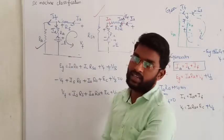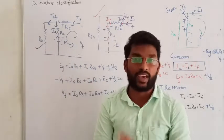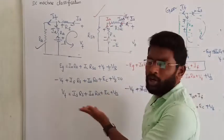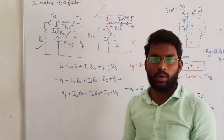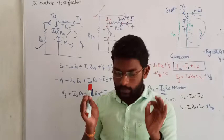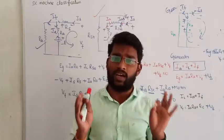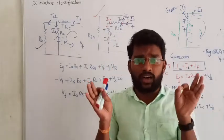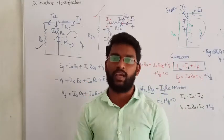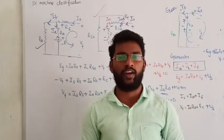For all classifications of DC machines, you don't need to memorize all these equations. While solving the problem, simply apply KVL and KCL and try to understand how to apply them — that is enough.